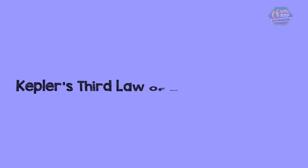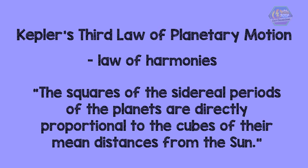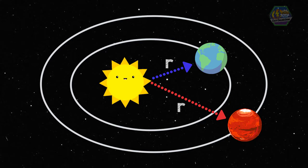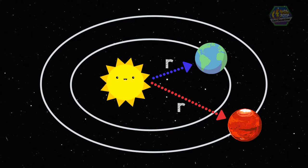Now let us move on to Kepler's third law of planetary motion, sometimes referred to as the law of harmonies. It can be stated as: the squares of the sidereal periods of the planets are directly proportional to the cubes of their mean distances from the Sun. It compares the orbital period and radius of orbit of a planet to those of other planets — the ratio of the squares of the periods to the cubes of the average distances from the Sun is the same for every planet, as shown in this illustration.